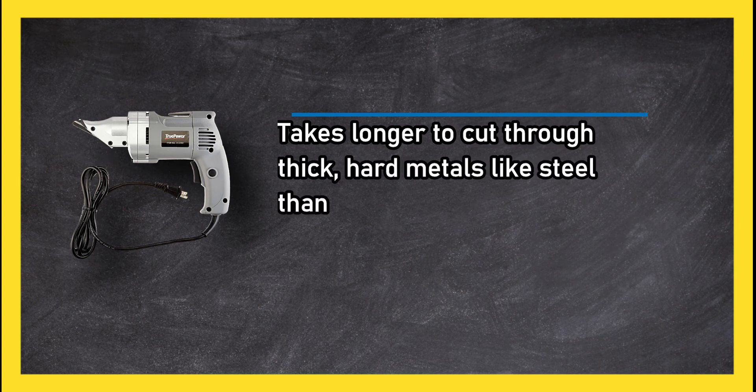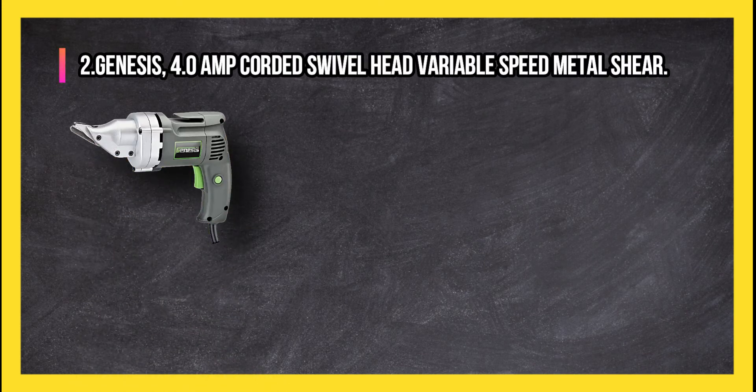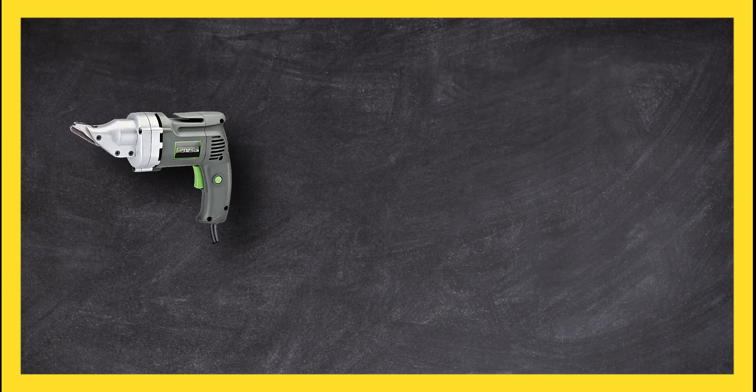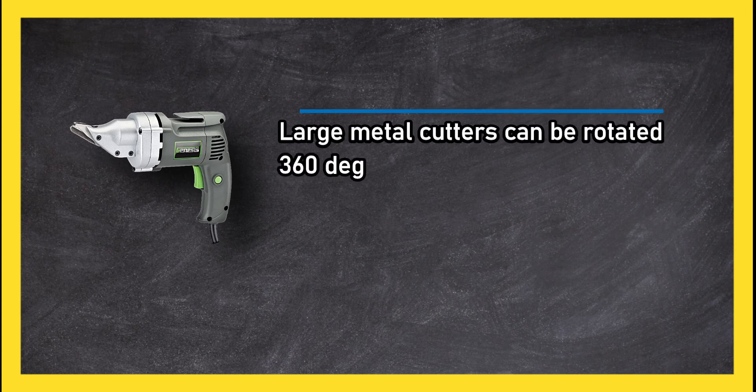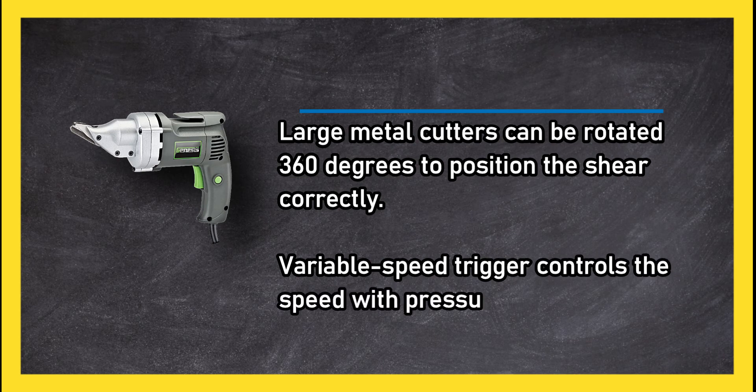At number two: Genesis 4.0 Amp Corded Swivel Head Variable Speed Metal Shear. Large metal cutters can be rotated 360 degrees to position the shear correctly. Variable speed trigger controls the speed with pressure. Easy to move around.